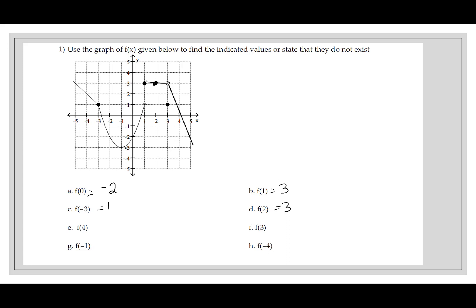I don't have to have a dot visible right there as long as I can read the y value. For f of 4, it's somewhere above the x-axis — lower than 1, greater than 0 — so it's okay to estimate, maybe 0.2 or 0.25. At 3 I can see a dot at 1. At negative 1, that's negative 3. At negative 4, putting a dot in there, that's 2.